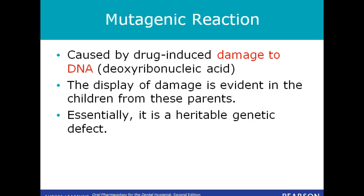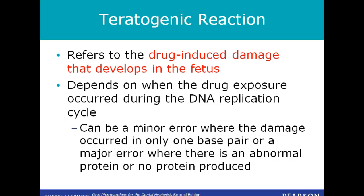A mutagenic reaction is caused by drug-induced damage to DNA. The display of damage is evident in the children from these parents; essentially, it is an inherited genetic defect. A teratogenic reaction refers to the drug-induced damage that develops in the fetus. It depends on when the drug exposure occurred during the DNA replication cycle. It can be a minor error where the damage occurred in only one base pair, or a major error where there is an abnormal protein or no protein produced. Most teratogenic drug effects become evident when the fetus is in the first trimester of organogenesis.